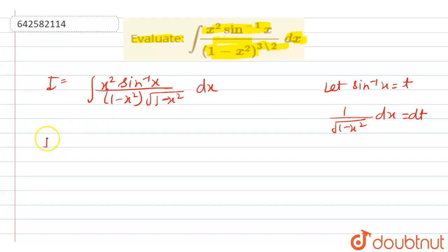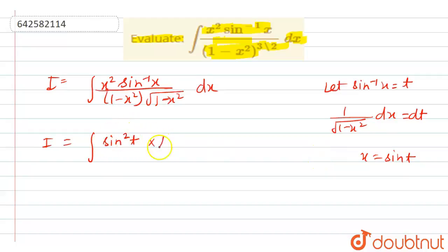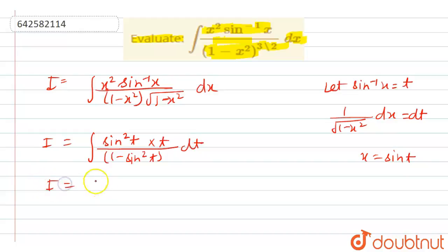From here we get i equal to the integration. Here, x is equal to sine t. So we have sine squared t into t, upon (1 minus sine squared t), dt. So we get i equal to sine squared t upon (1 minus sine squared t), which equals cos squared t, into t dt.